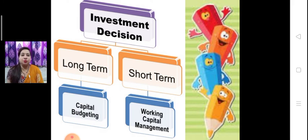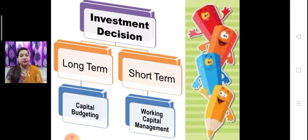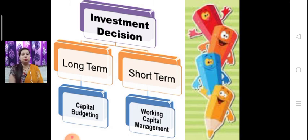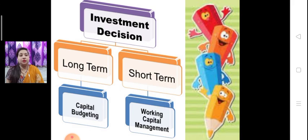As we learned, the financial decision is divided into three parts: number one is financing decision, second is dividend decision, and third one is investment decision. As we learnt in our previous video, the investment decision is also divided into two terms — long term investment or short term investment — meaning how and where we have to invest.